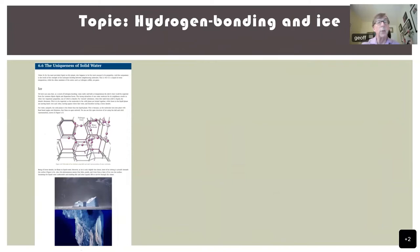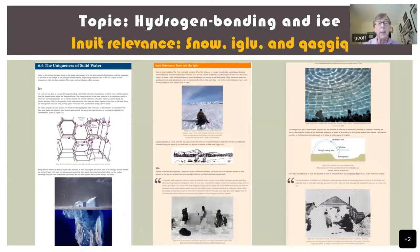Week six touches on ice — a major topic involving hydrogen bonding for those with some chemistry background. This relates back to snow and the igloo and qajaq, the large igloo-type constructions. We also get into using snow as an insulator because of the trapped air within the structure of snow.